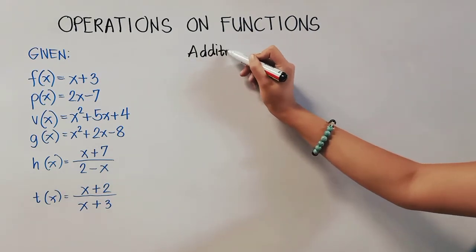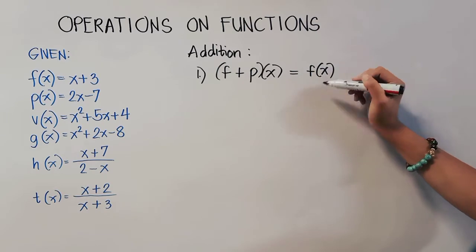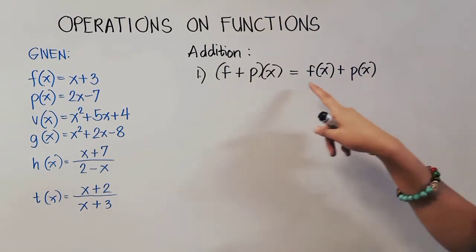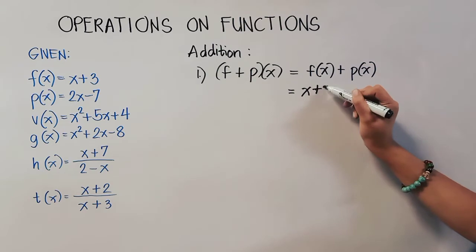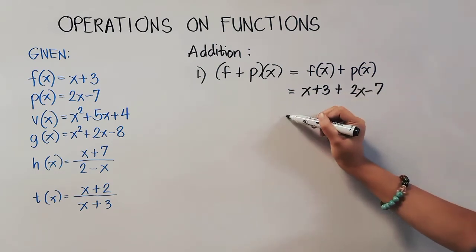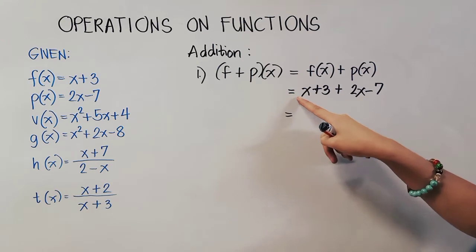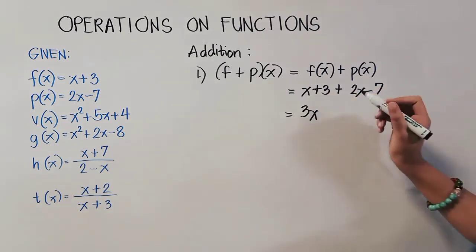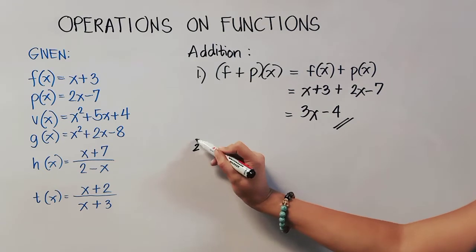Let us start with addition. Number 1 can be written as f(x) + P(x). We look at our given and substitute: f(x) = x + 3 and P(x) = 2x − 7. We look for like terms — same variable and exponent. So 1x + 2x = 3x, and 3 − 7: different signs, subtract, take the sign of the bigger number, so that's negative 4. This is our final answer.